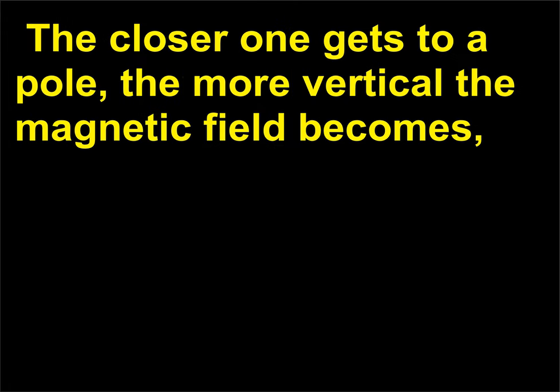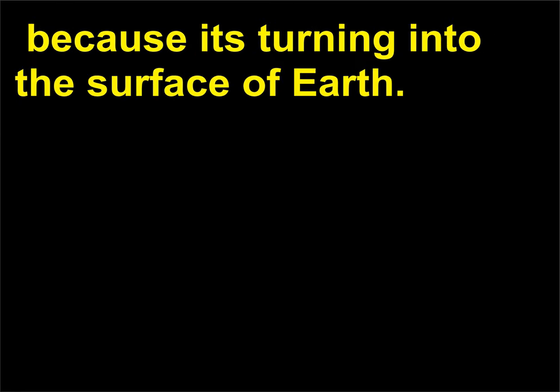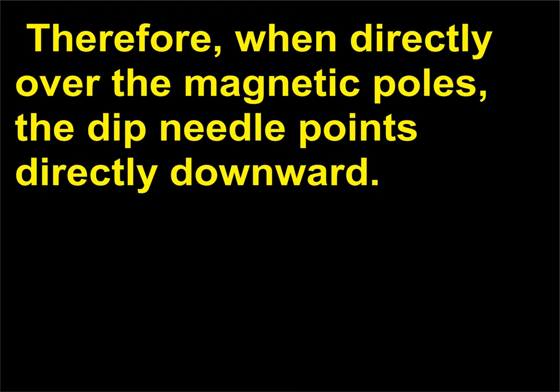The closer one gets to a pole, the more vertical the magnetic field becomes because it's turning into the surface of earth. Therefore, when directly over the magnetic poles, the dip needle points directly downward.